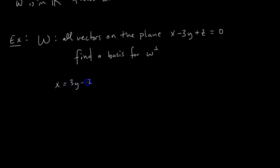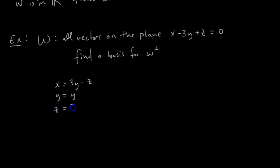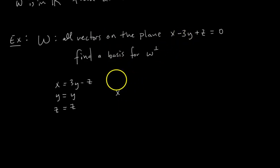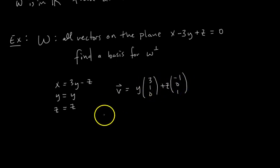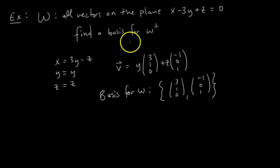Given the plane equation, if we isolate x we get x equals 3y minus z. Y can be anything, so y equals y; z can be anything, so z equals z. We can write a general vector v in this plane as y times (3, 1, 0) plus z times (-1, 0, 1). So a basis for W is given by the set of these two vectors: {(3, 1, 0), (-1, 0, 1)}.